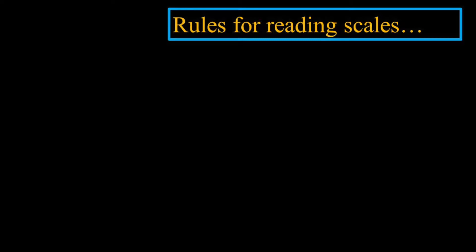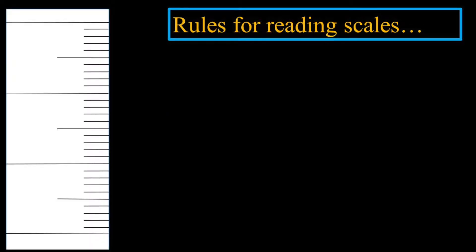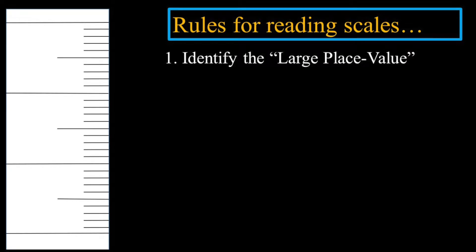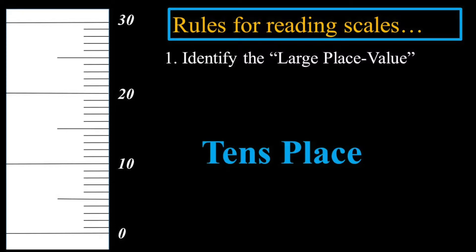Let's look at rules for reading scales — the actual rules, like how do you actually read them — understanding, of course, that you read any scale to one estimated place value. Here are the rules for reading a scale. Here's a scale on the left. You want to identify the large place value. The large graduations are going to be 0, 10, next will be 20, then 30, et cetera. So that'll be the 10's place.